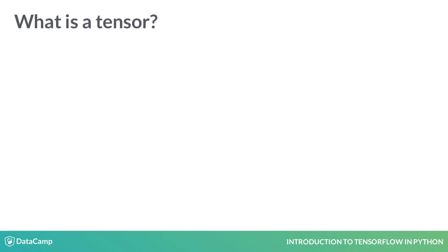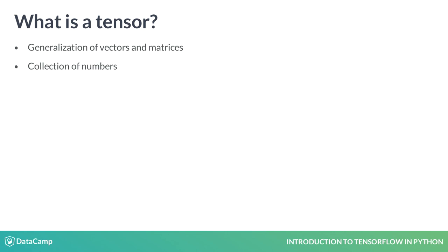The TensorFlow documentation describes a tensor as a generalization of vectors and matrices to potentially higher dimensions. If you're not familiar with linear algebra, you can simply think of a tensor as a collection of numbers arranged into a particular shape.